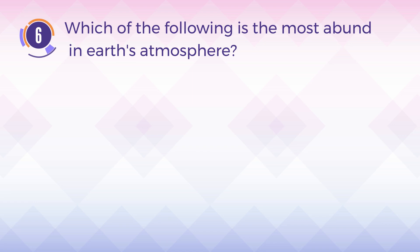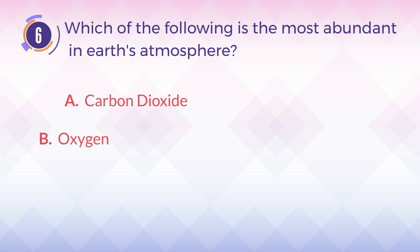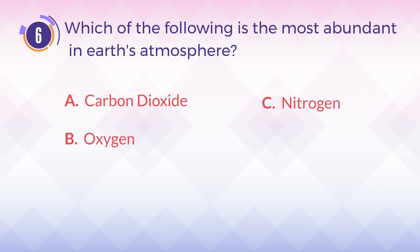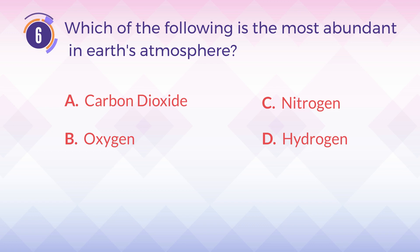Number 6. Which of the following is the most abundant in Earth's atmosphere? A. Carbon dioxide. B. Oxygen. C. Nitrogen. D. Hydrogen. The answer is C: nitrogen.